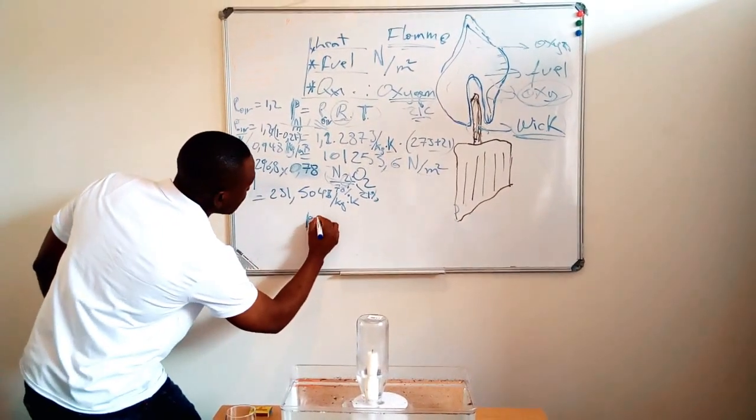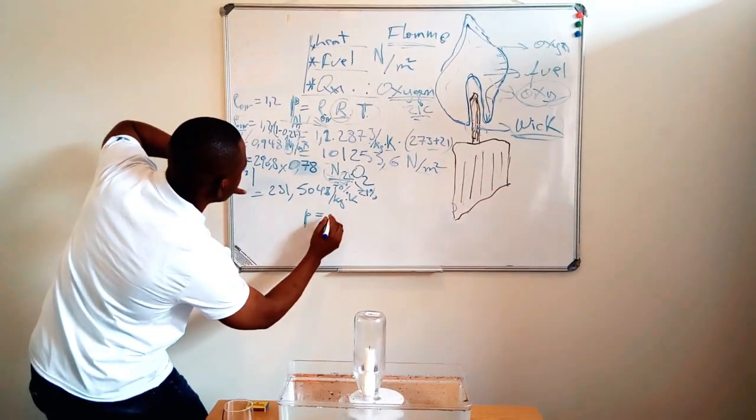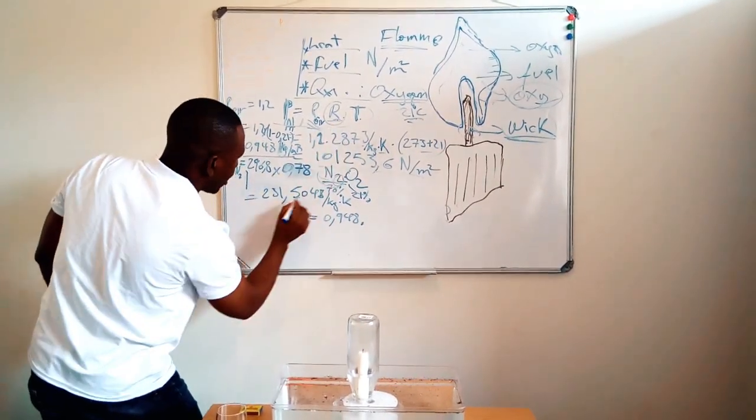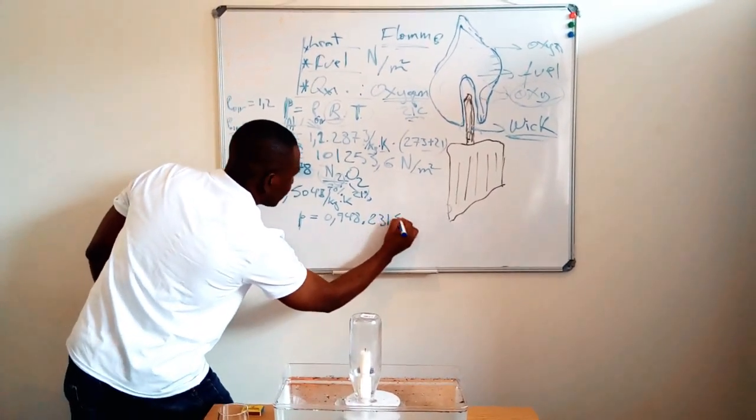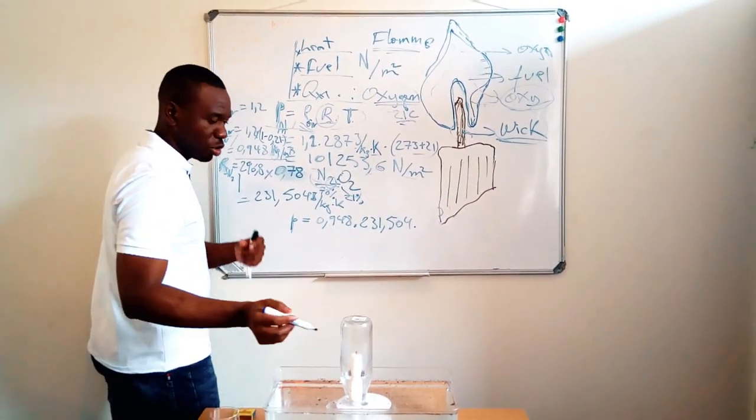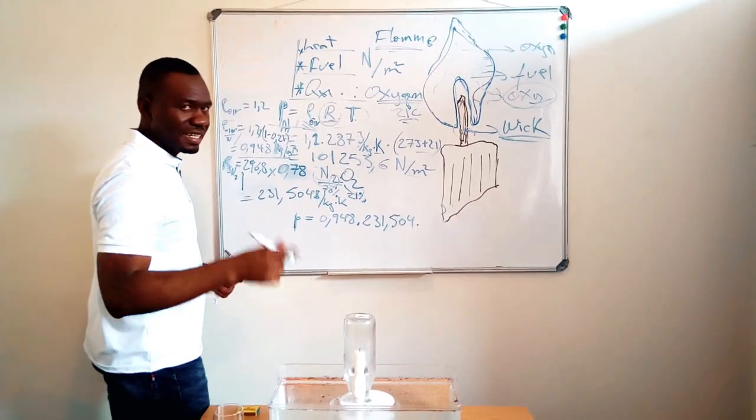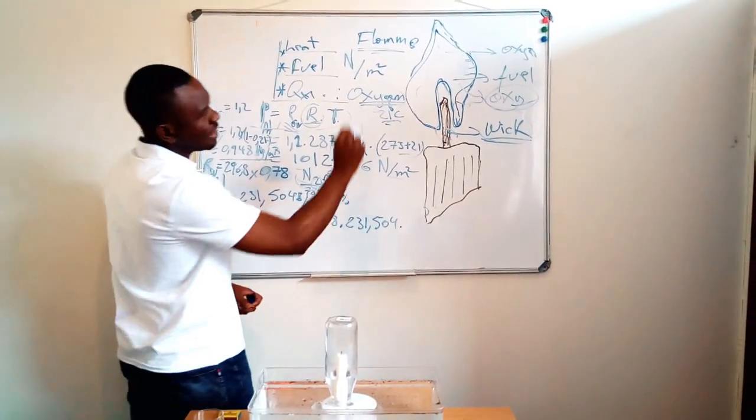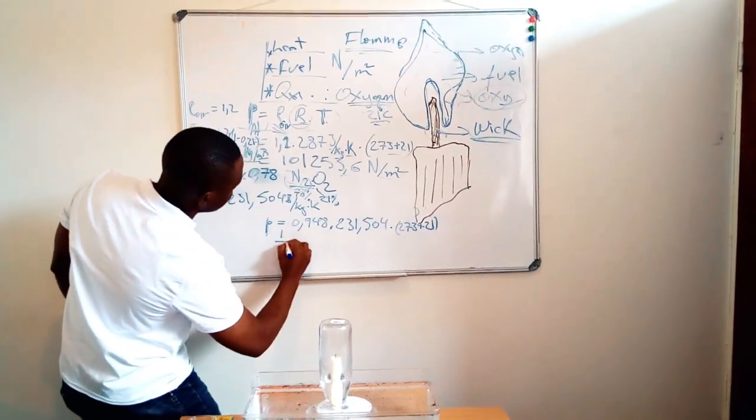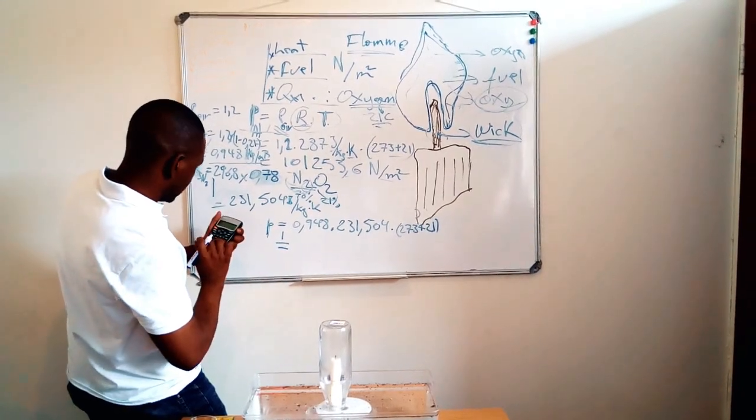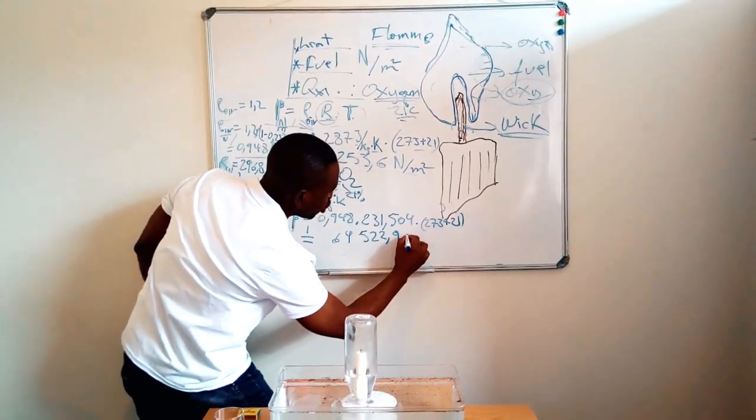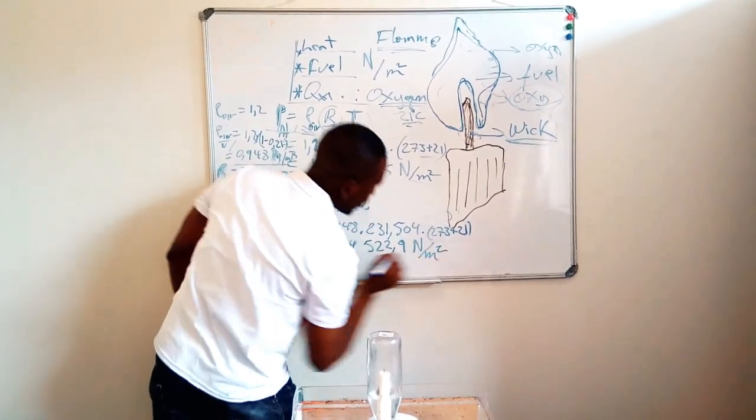So now my pressure inside my bottle is the density of what I've got, which is 0.948 multiplied by r, which is 231.54. Now the temperature, you guys might say that the temperature changed, went higher—yes, but not that much, because the flame that was made there did not have enough energy to change the whole temperature inside the bottle. So let's consider the same temperature. So times 273 plus 21. So now this gives me, where's my calculator, 64,522.9 newtons per meter squared.